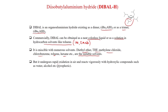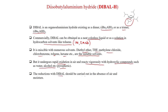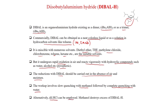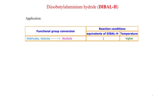DIBAL-H undergoes rapid oxidation in air and reacts vigorously with hydroxylic compounds such as water and alcohol — so this is a pyrophoric reagent. Thus, reduction with DIBAL-H should be carried out in the absence of air and moisture; this should be a dry reaction. The workup involves slow quenching with methanol followed by complete quenching with water, or alternatively dilute HCl can be employed. Methanol destroys excess DIBAL-H.